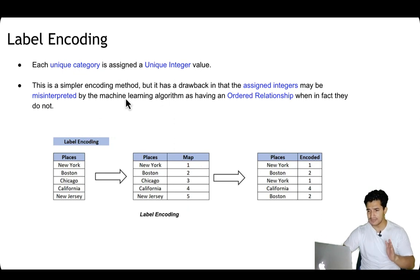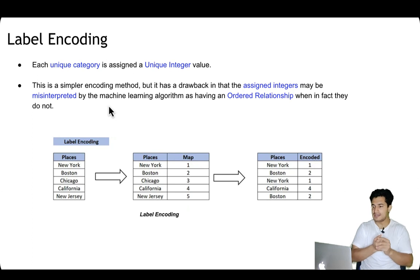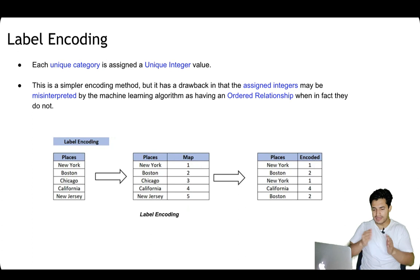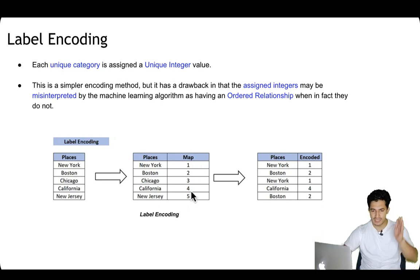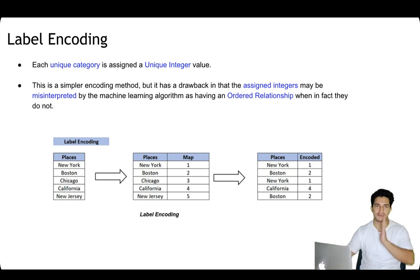This is a simple encoding method, but the drawback is that the assigned integers may be misinterpreted by the machine learning algorithm as having an order relationship. We know there is no intrinsic order among these places, but if we give numbers like 1, 2, 3, 4, the ML model may think there is some ordering when in reality there is not. This is one of the drawbacks of label encoding.